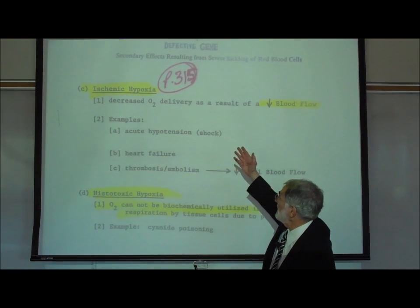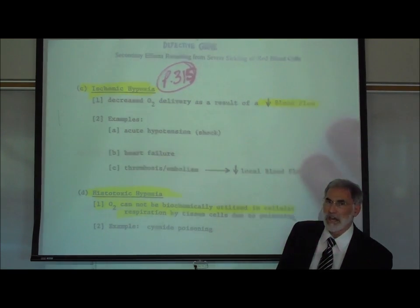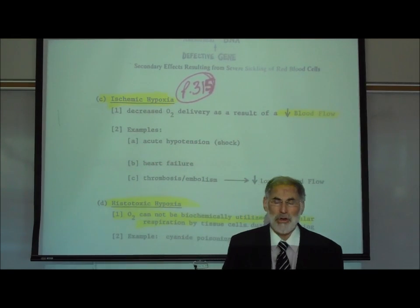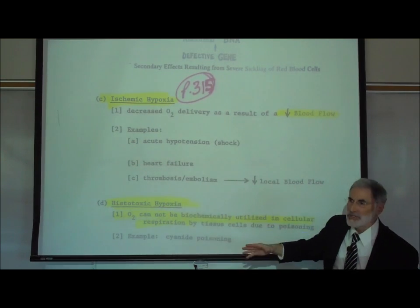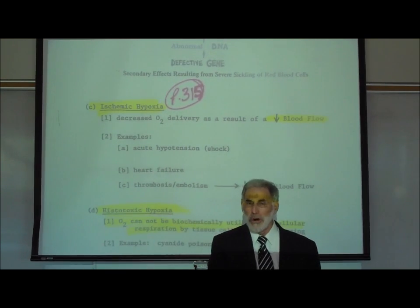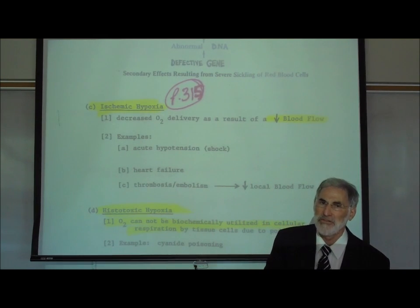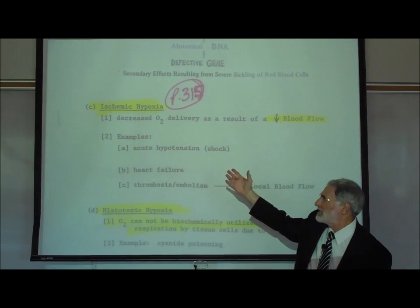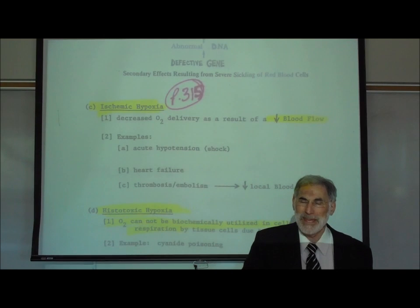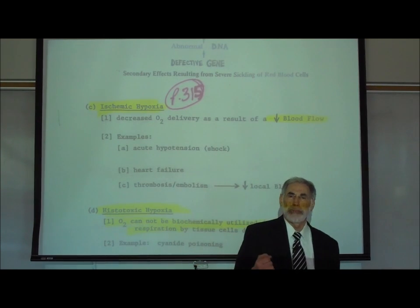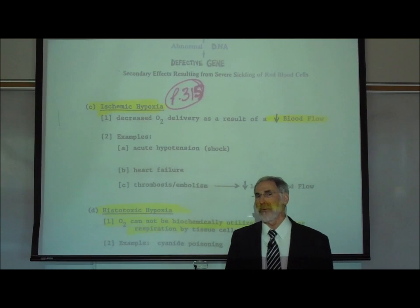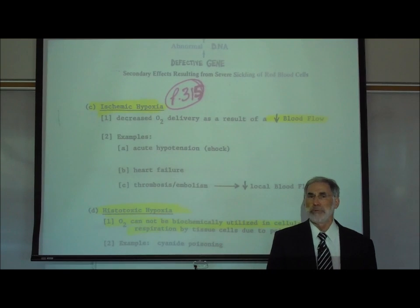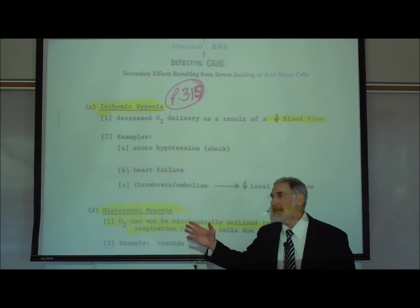On page 315, a third category of hypoxia is ischemic hypoxia. Ischemic hypoxia is caused by a decrease in blood flow, so the blood is not flowing normally and therefore there is less delivery of oxygen to the tissues of the body. This happens with hypotension — a drop in blood pressure. It is the blood pressure that pushes the blood through the vessels of the body, and when it drops, that leads to slowing of blood flow and ischemic hypoxia.